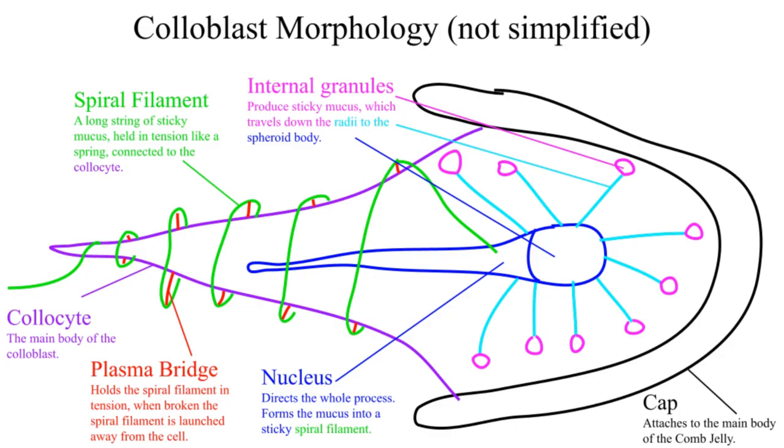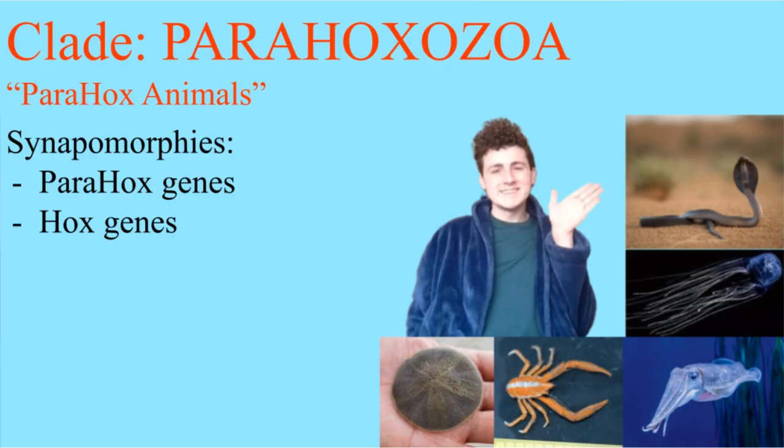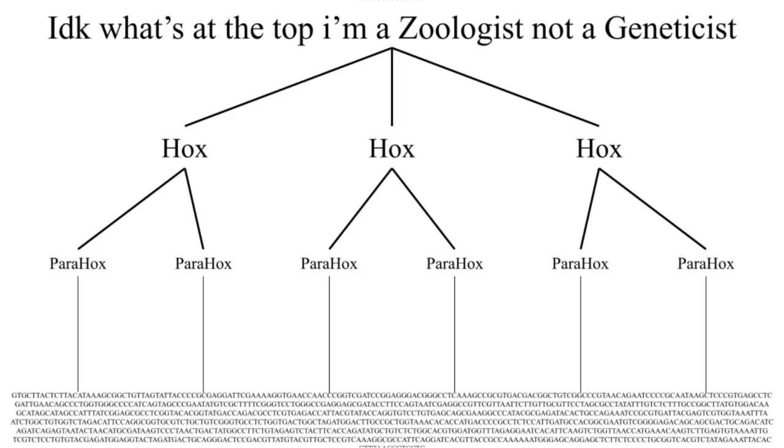Ctenophores are notable because they have coloblasts, or sticky cells, and parahoxozoa have a parahox and a hox gene. These genes will be important as they extend into further lineages. They essentially work as middle managers, telling all the other genes how to work and where to go.